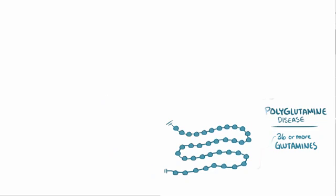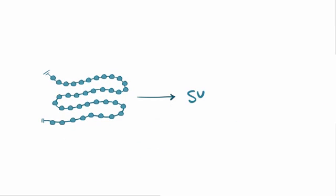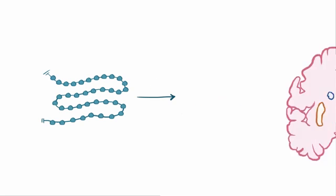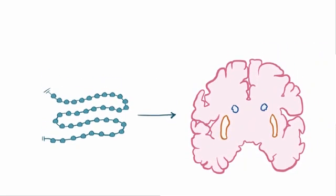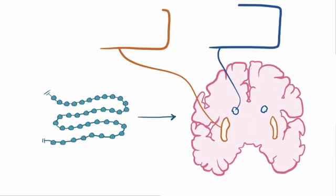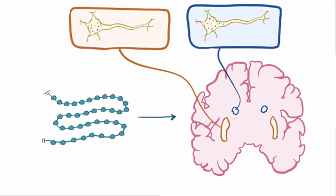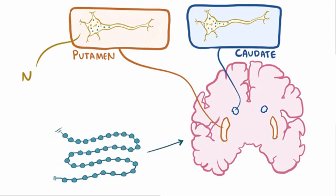The specific way in which extra glutamines causes HD symptoms isn't fully worked out, but some clues are that the mutated protein aggregates within the neuronal cells of the caudate and the putamen of the basal ganglia, causing neuronal cell death.